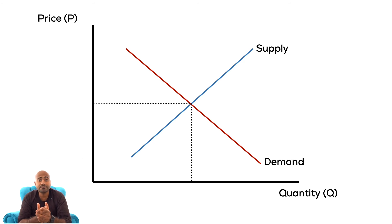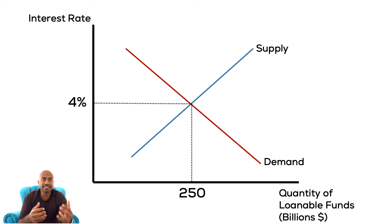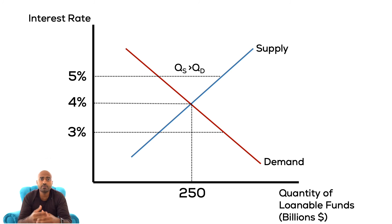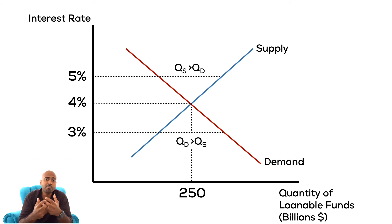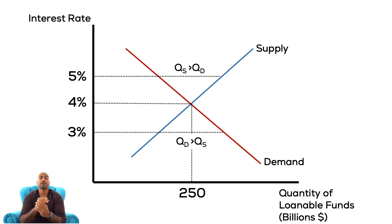As interest rates fall, borrowers increase the quantity of loans demanded. At the intersection we have an interest rate that creates an equilibrium in this market — all funds saved are lent out to borrowers. At an interest rate higher than equilibrium we would have too much saving and not enough borrowing. At a rate below equilibrium we would have too many borrowers and not enough savers.